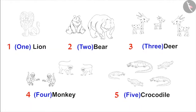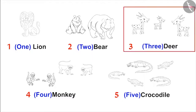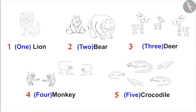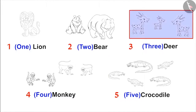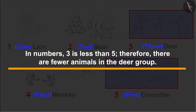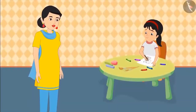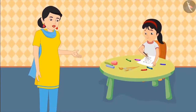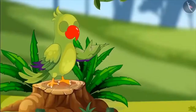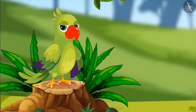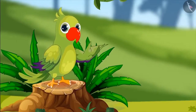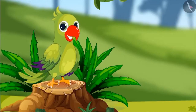Very good, Pinkie. Now tell me: are there fewer animals in the deer group or in the crocodile group? There are 3 animals in the deer group and 5 in the crocodile group. Three is less than five, so there are fewer animals in the deer group. Very good, Pinkie. Now wash your hands and come for food. So children, you saw how Pinkie compared the number of different animals. Can you also compare the number of things near you?